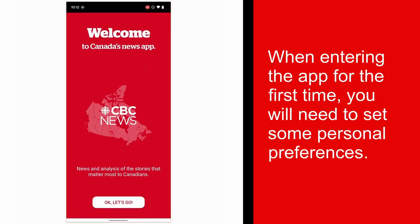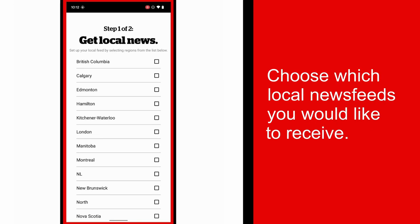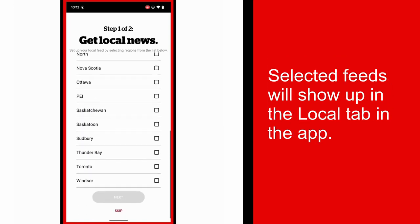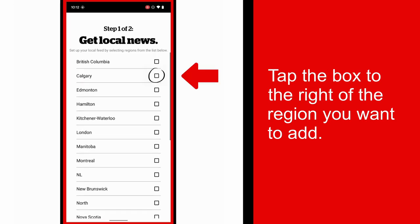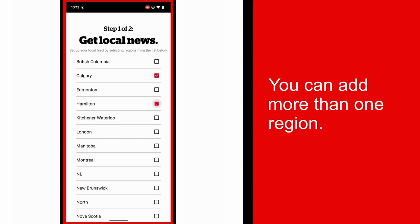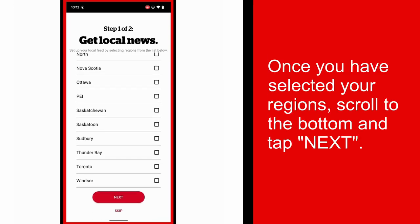When entering the app for the first time, you will be required to set some personal preferences before you get started. Step 1: Set up your local feed. Choose which local news feeds you would like to receive. The feeds that you select will appear in the local tab of the app. Tap the box to the right of the region you would like to add. You can add more than one region. Once you have chosen the regions you want, scroll to the bottom of the list and select Next.